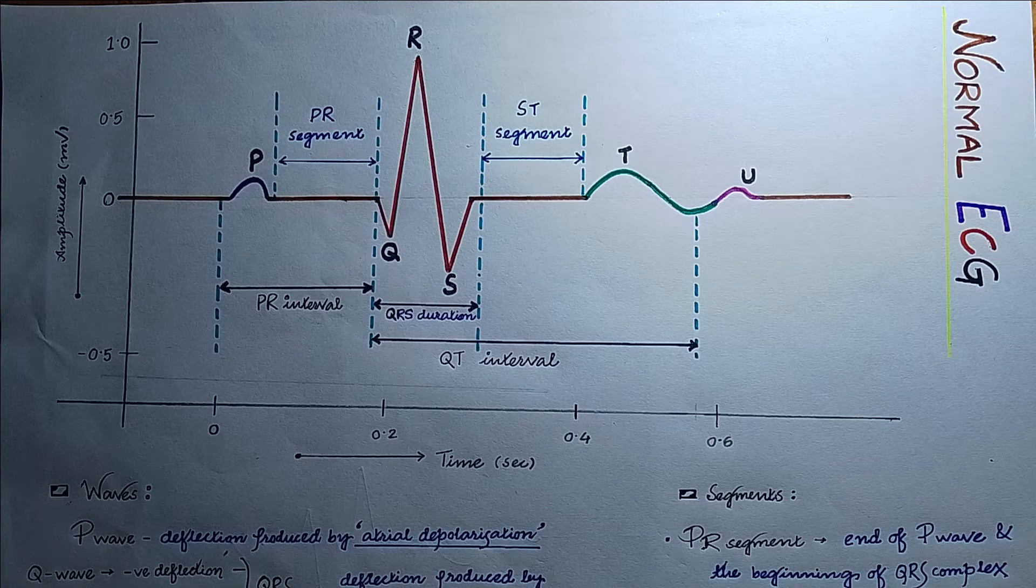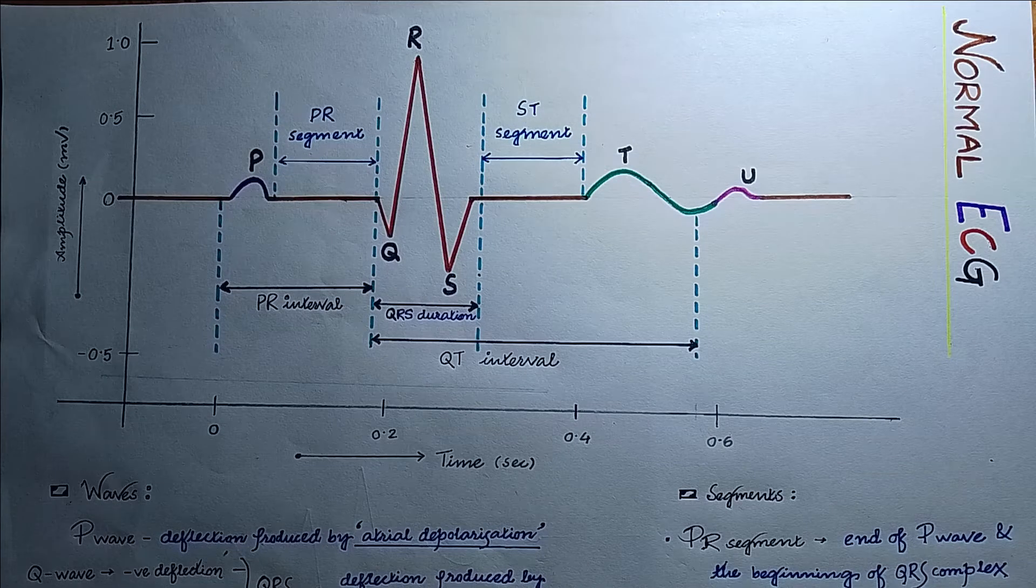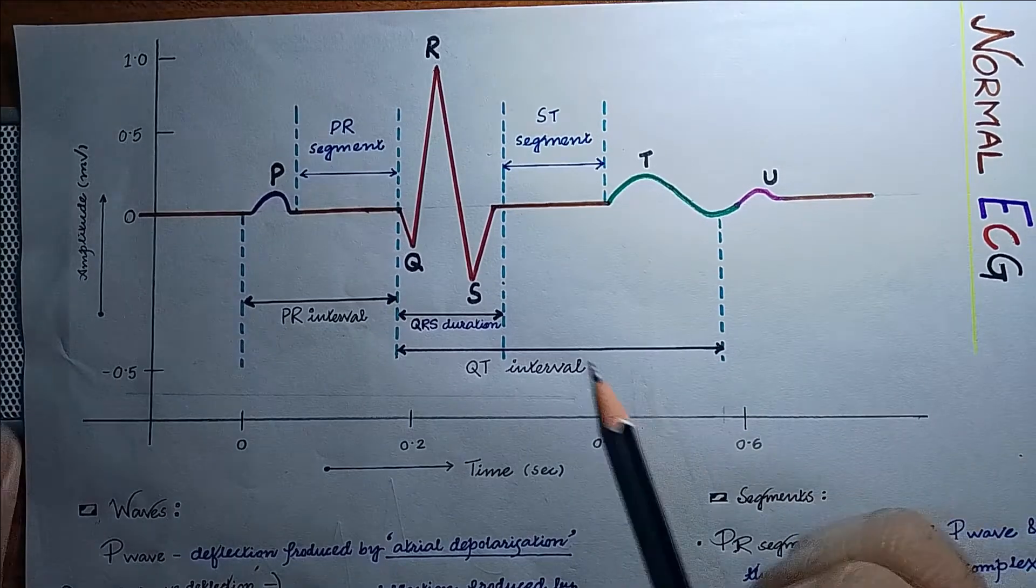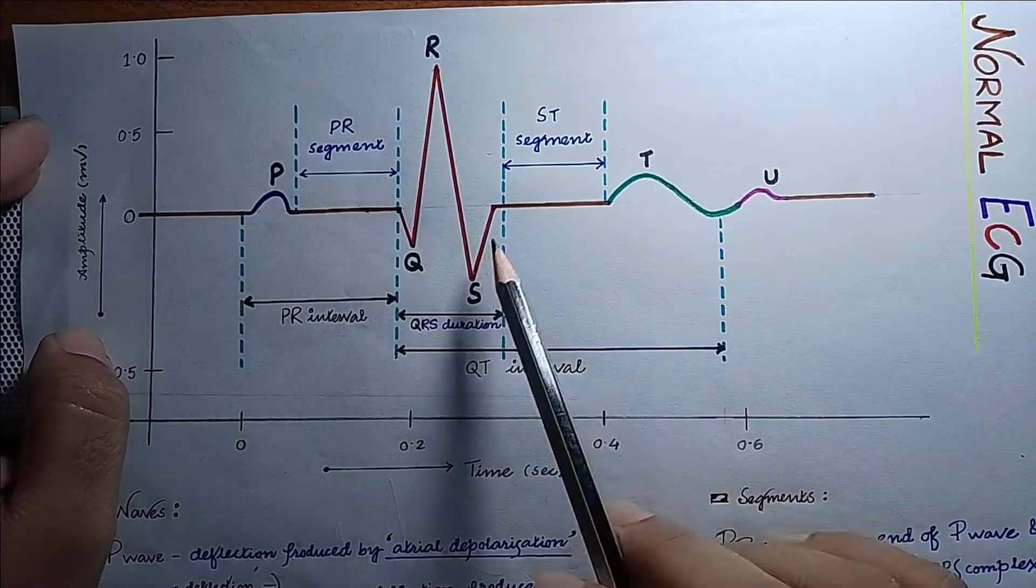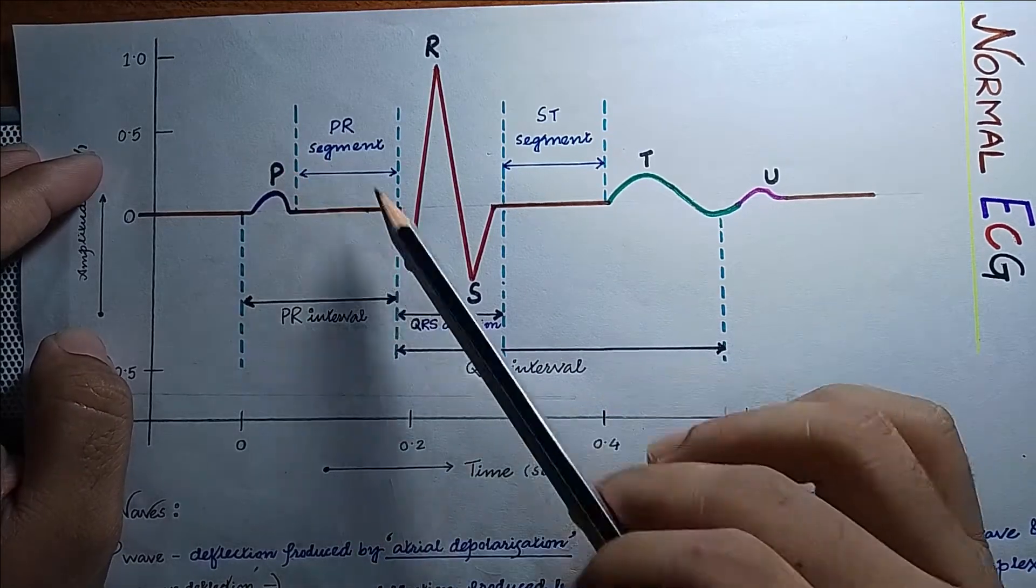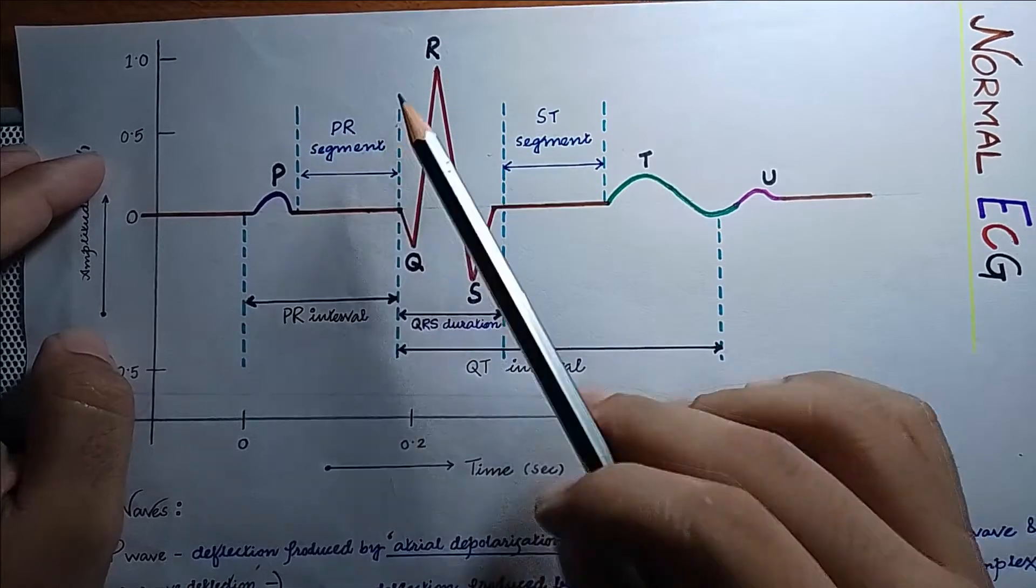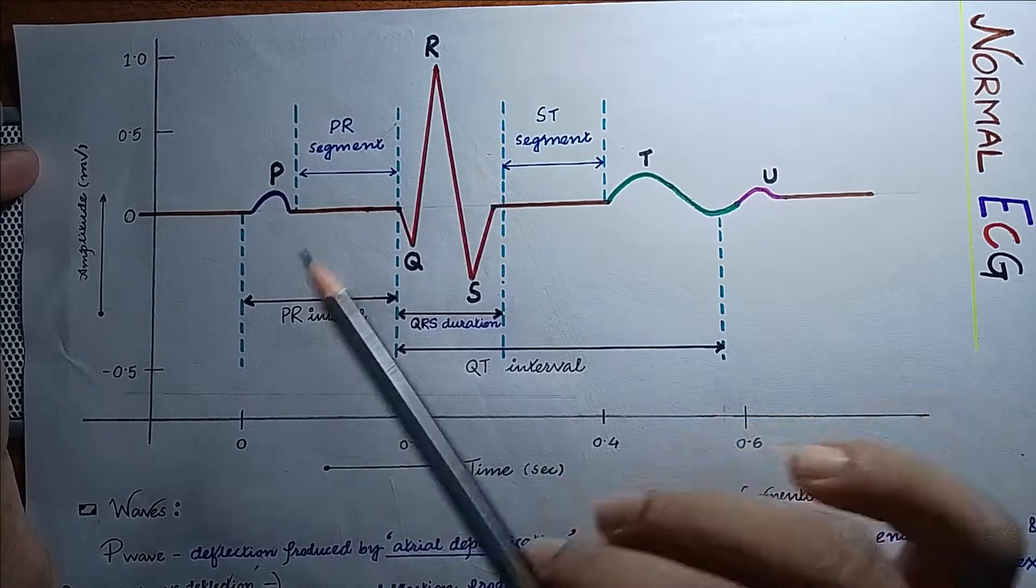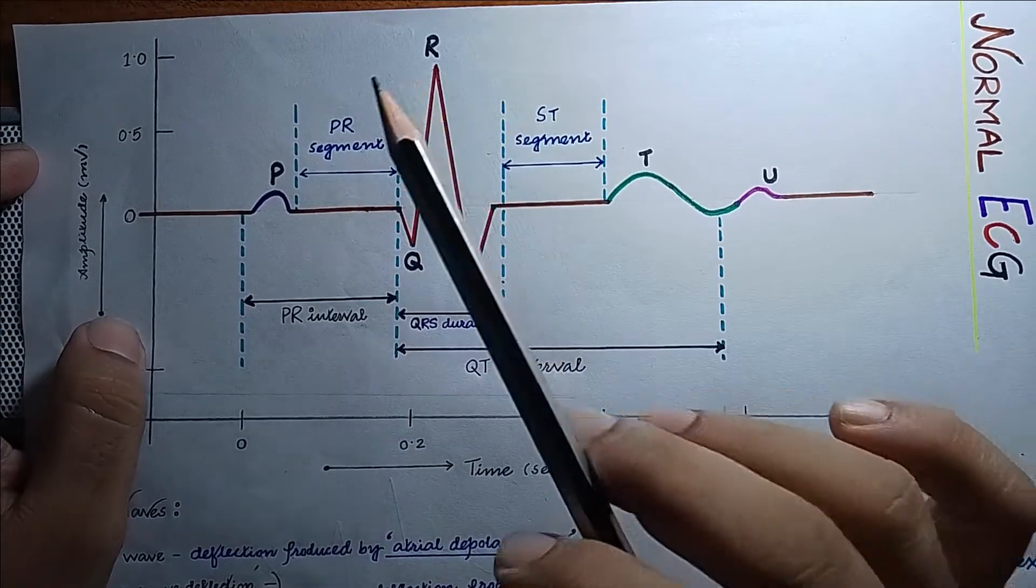Hello everyone, welcome to the channel. In today's video we are going to discuss how a normal ECG looks like. Here you can see a normal ECG reading. In an ECG reading there are different waves, then there is segment and there is interval. We will discuss everything one by one.